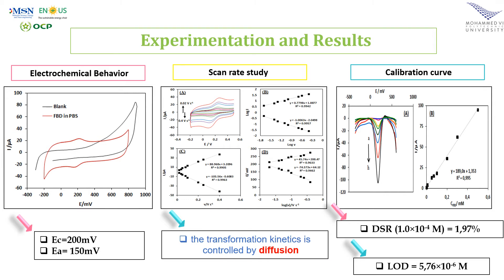Subsequently, the calibration curve was plotted under already optimized conditions. It can be seen that the current intensity increases linearly with the flubendiamide concentration in the range of 10⁻⁶ to 5×10⁻⁴ mol per liter. The accuracy of the method is expressed in terms of the relative standard deviation, which is less than 5%, showing that our method is accurate and capable of detecting flubendiamide at a detection limit of 0.5 micromole per liter.